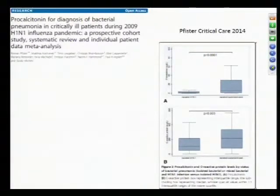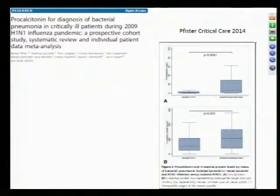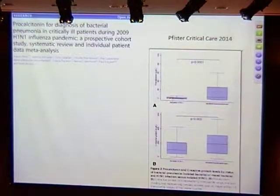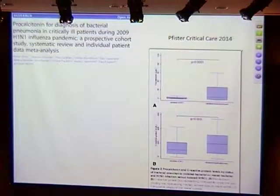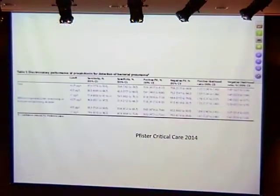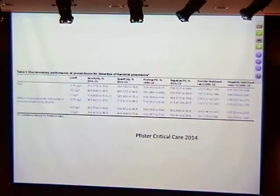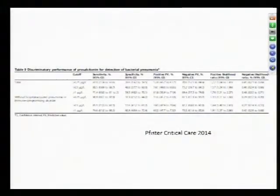During the 2009 H1N1 pandemic, procalcitonin was compared to C-reactive protein for distinguishing bacterial from viral illness. Patients with isolated H1N1 had low procalcitonin, while those with bacterial co-infection had elevated levels. CRP did not differentiate as well between the two. In non-hospitalized, non-immunocompromised patients, the test's discriminating ability was even better. The negative likelihood ratio for ruling out bacterial infection was notably strong.